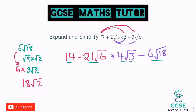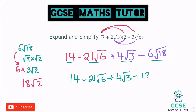So let's write what we've got now: 14 minus 21 root 6 — which doesn't simplify — plus 4 root 3 — which doesn't simplify — take away 18 root 2 — which again doesn't simplify. We'd have to leave that answer as it is, because we've got a root 6, a root 3, a root 2, and a normal number — so that would be our final answer, which looks very different to some of the others.